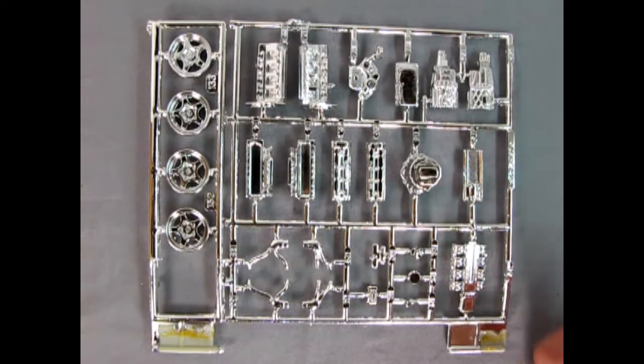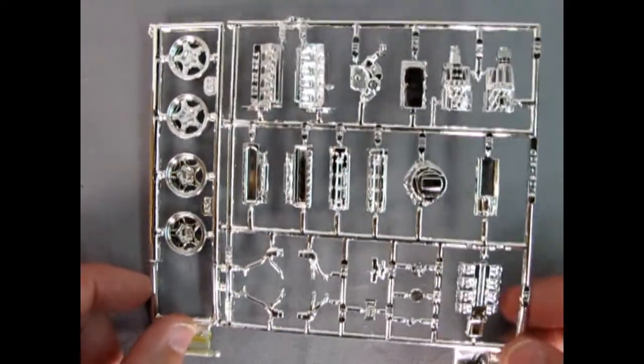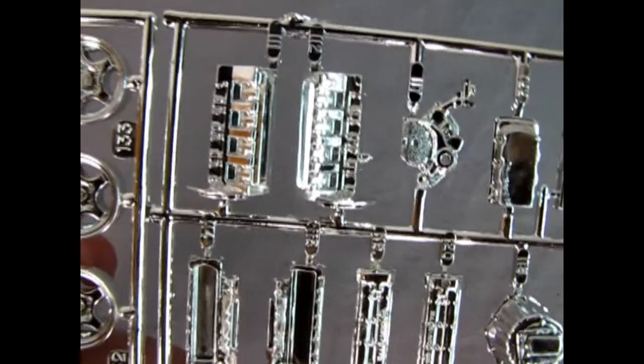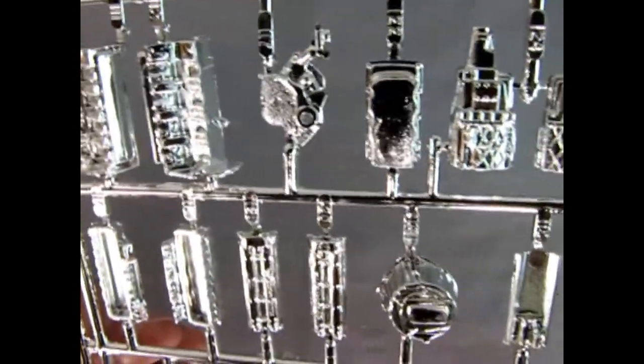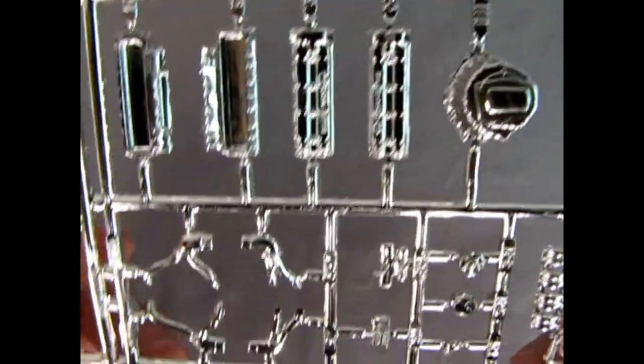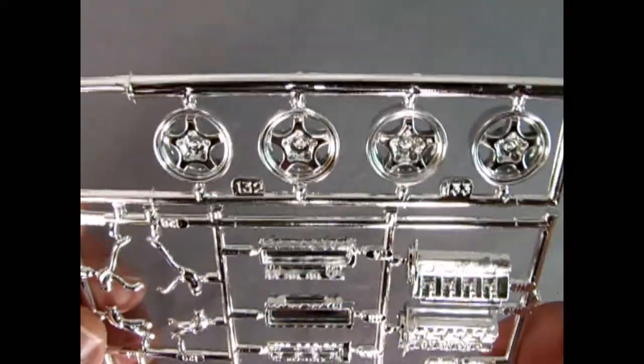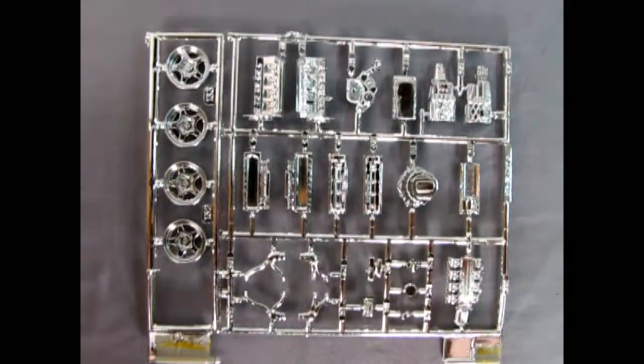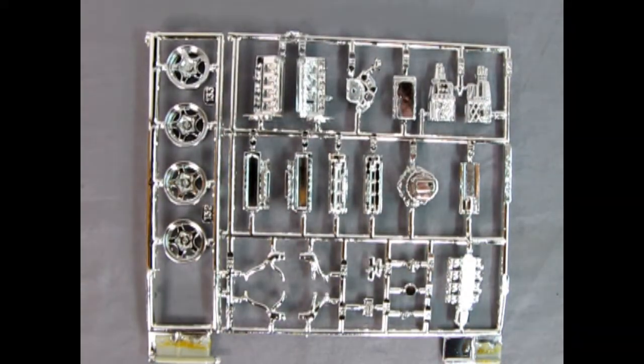So here we have the chrome components that make up the wonderful engine. This is that Lotus motor again. Take a look at the wonderful engine block and the covers. Really excellent looking stuff. And there we also have our chrome plated wheels. So again really excellent work by AMT in bringing us this wonderful chrome plated engine.